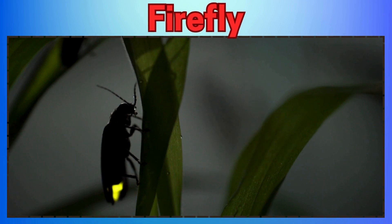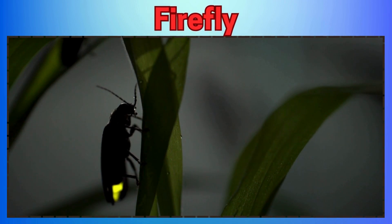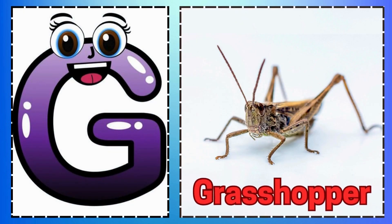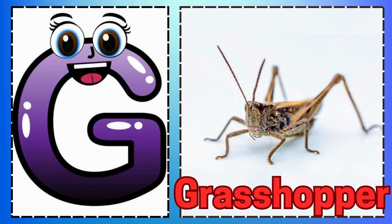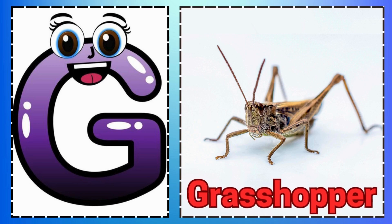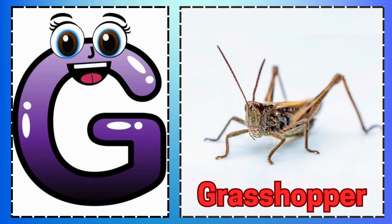A is for Ants so Tiny and Strong. B is for Butterfly Fluttering Along. C is for Caterpillar.